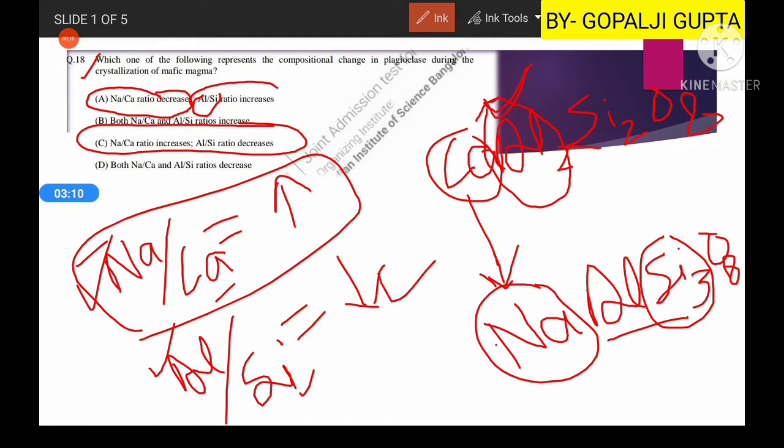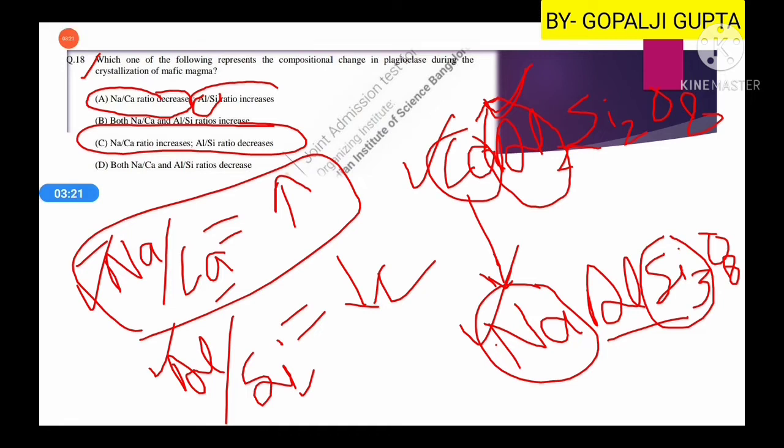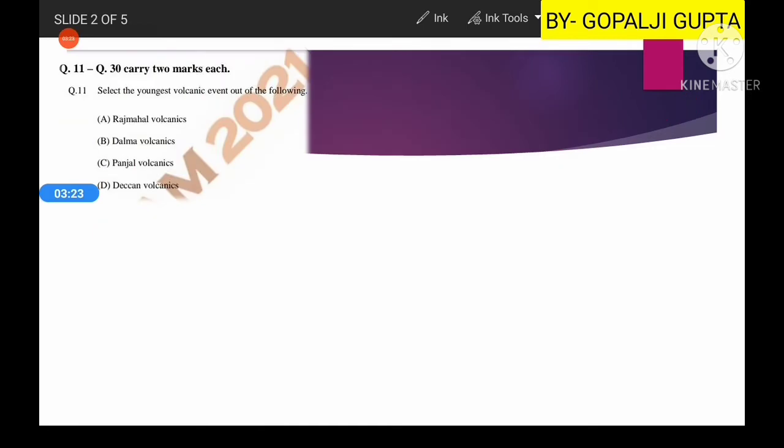What do you need here? You have to remember the formula of these two and a simple reasoning ability of how this ratio can change with time. Now let us see another question. Select the youngest volcanic event out of the following: Raj Mahal Volcanics, Dalma Volcanics, Panjal Volcanics, and Deccan Volcanics.